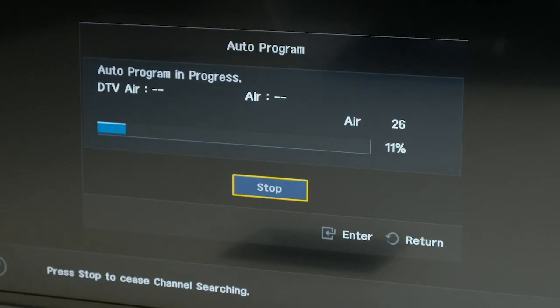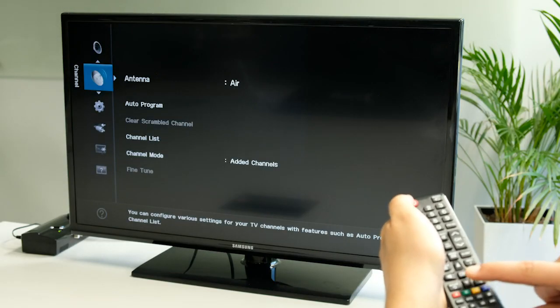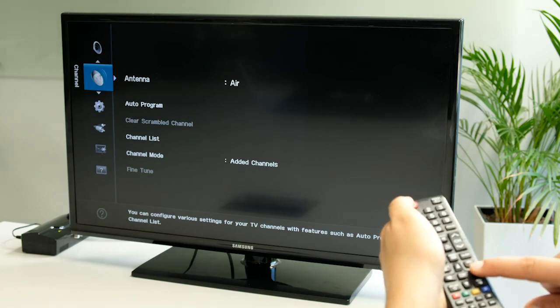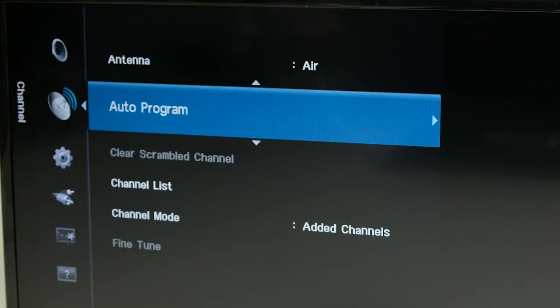Do another channel search after adjusting the signal booster gain dial. By going to your TV menu settings, select Channel, then Antenna, Air, and finally Channel Search.